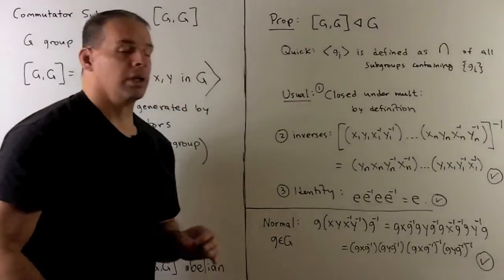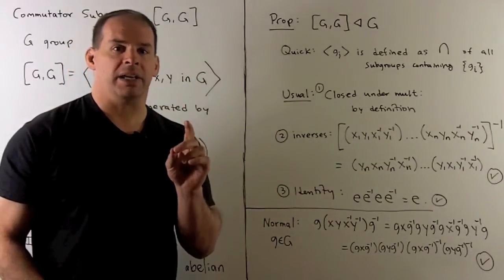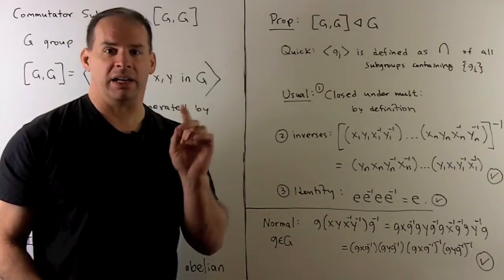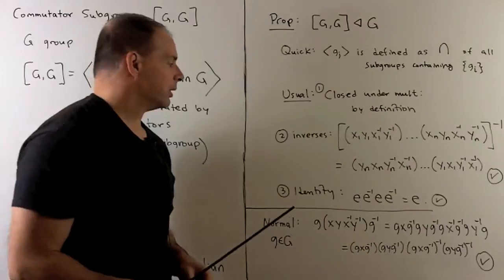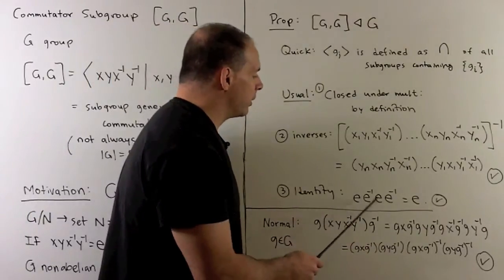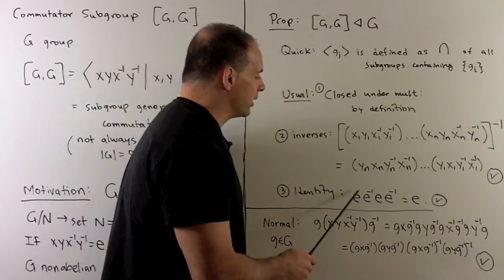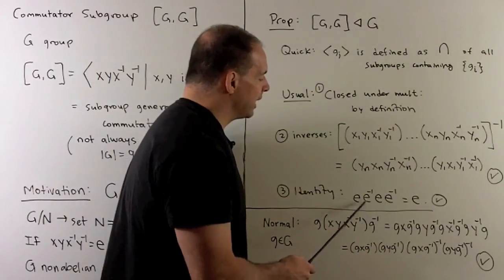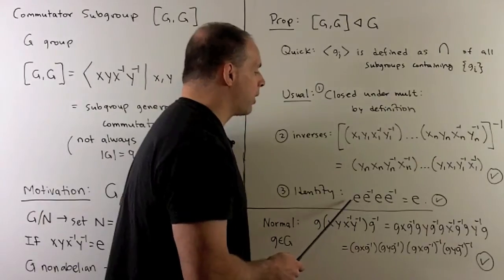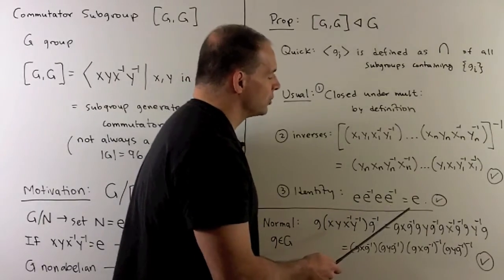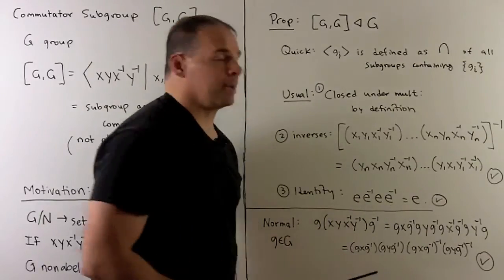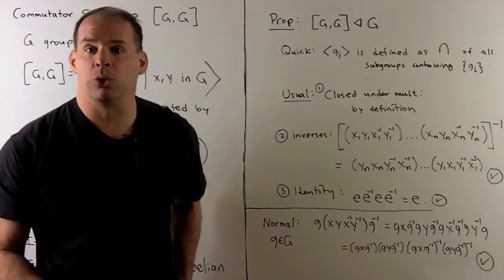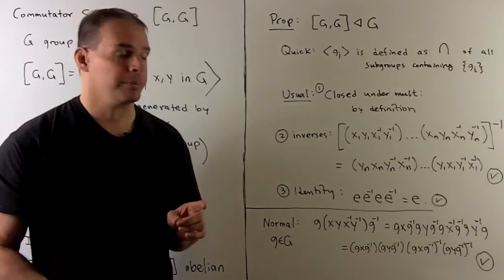We still have to show non-empty, and we do that by checking the identity element. If we take the commutator of the identity with itself, we just get a product of four identity elements, which is the identity. So our commutator subgroup is always non-empty.